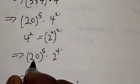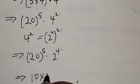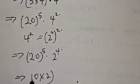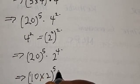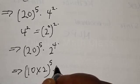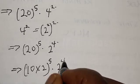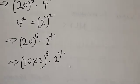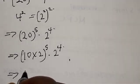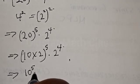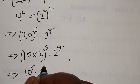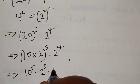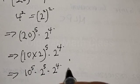Now, 20 can also be expressed as 10 times 2, so 20 raised to power 5 becomes 10 times 2, raised to power 5, multiplied by 2 raised to power 4. Expanding that gives us 10 raised to power 5 multiplied by 2 raised to power 5 multiplied by 2 raised to power 4.